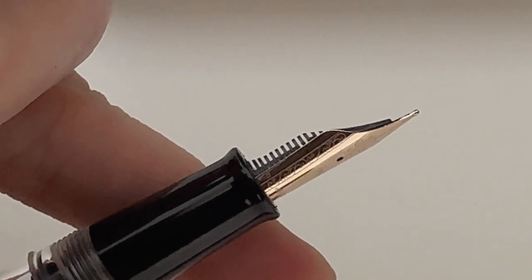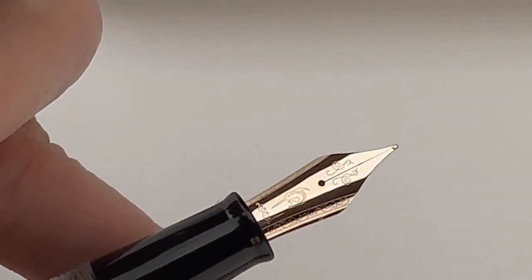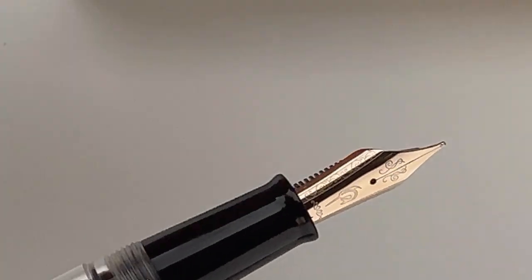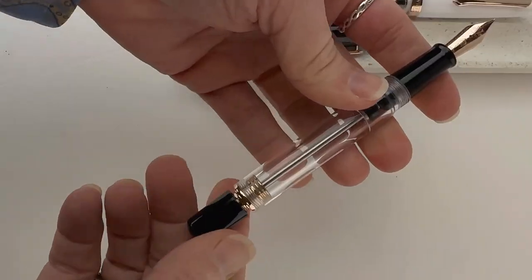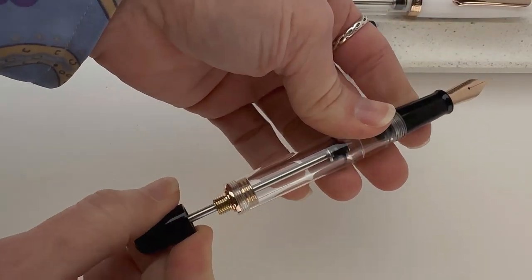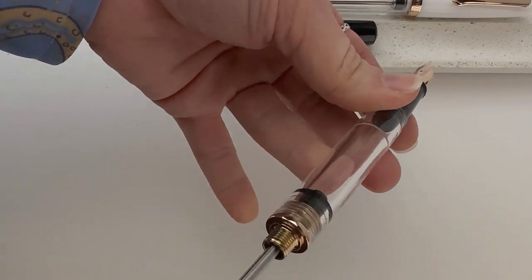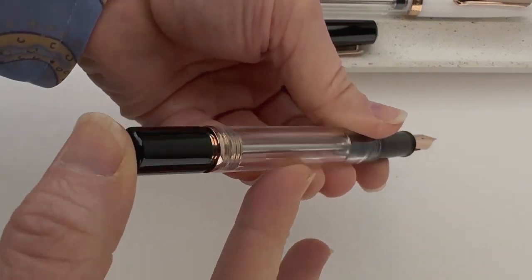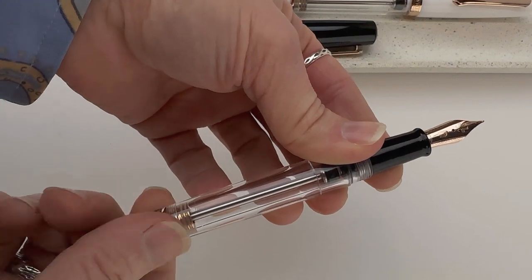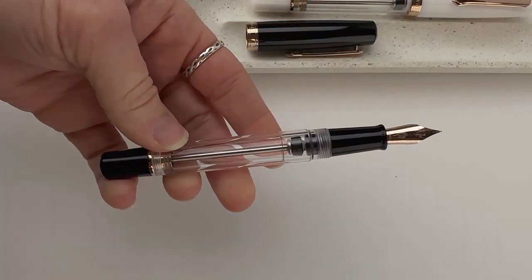And I find that their nibs start off really great. You don't have to work with them a lot to get them going, and they're really smooth. This is a look at the vacuum filler, how it works. When you go to fill your pen, you pull it all the way out, dip the nib in the ink, and then push it back in and screw it in, and your pen is filled with ink.